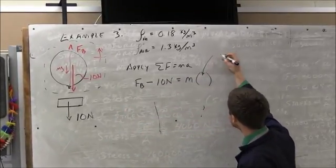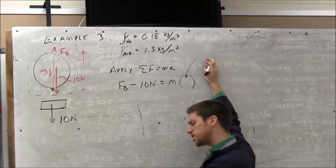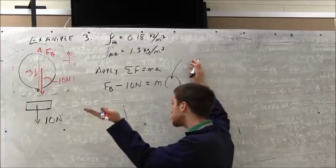And so we'll have a buoyant force minus 10 newtons equals M. Now, with the acceleration here, let's take the very specific case where this buoyant force has just started to lift it and it's going at constant velocity.